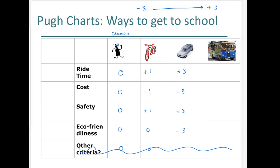For the trolley: ride time gets a plus two — not quite as good as the car. Cost is zero because it's free. Safety gets a plus two — there might be some concerns, but it's not quite as safe as the car. Eco-friendliness gets a negative one because there are more people sharing it, making it more efficient than a car.